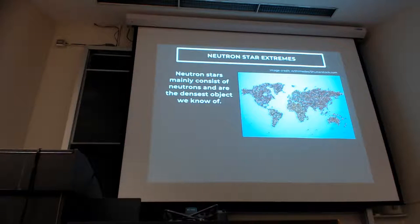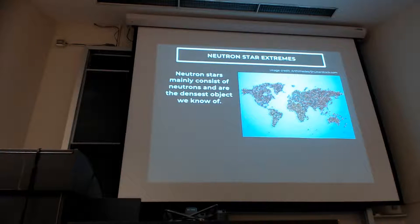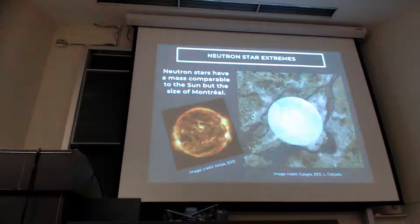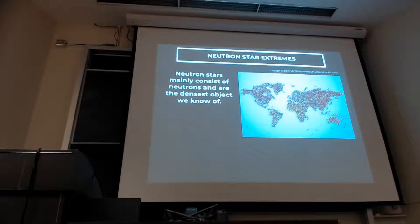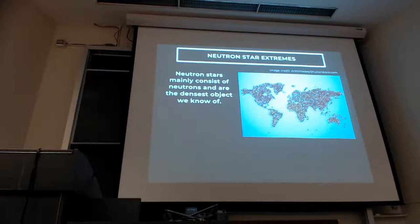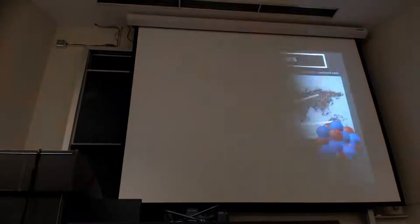Physicists are not particularly creative when it comes to naming things. A neutron star is called a neutron star because it consists mainly of neutrons. If you look at the volume and mass of these objects, you can calculate their density, and you find that they are the densest objects we actually know of. To give you an idea: take every single human being on Earth, violate every ethics violation you can possibly have, and compress them into the size of a sugar cube.